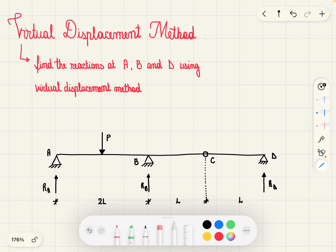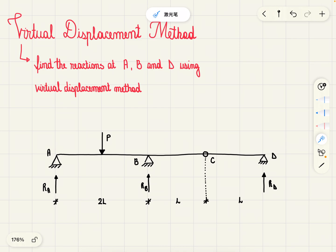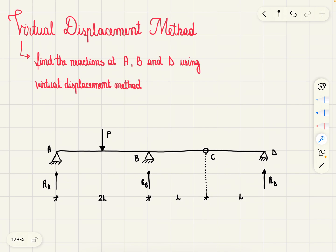To find the reactions at A, B and D using the virtual displacement method, we are going to apply a unit virtual force in the direction of the reaction force we are trying to find — one for A, one for B and one for D. Then we draw bending moment diagrams for each of them. We know that this system is in equilibrium, so any work done due to these virtual displacements is going to be equal to zero.